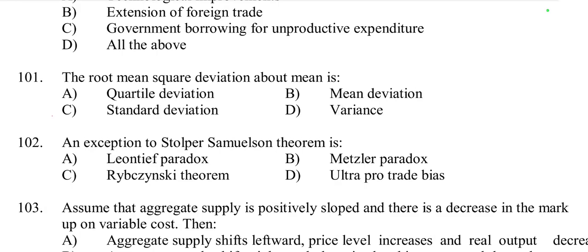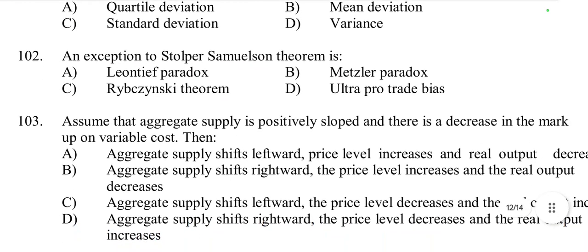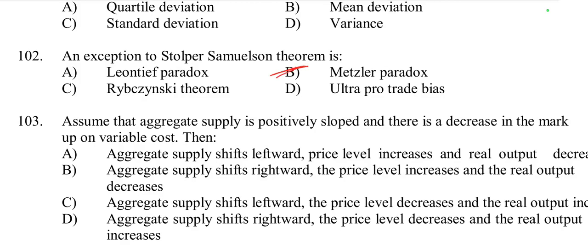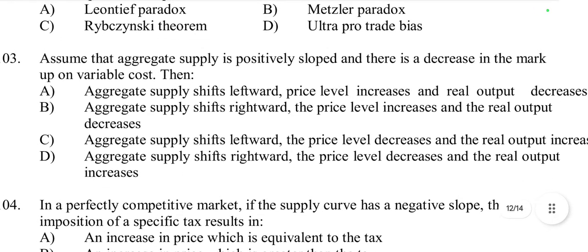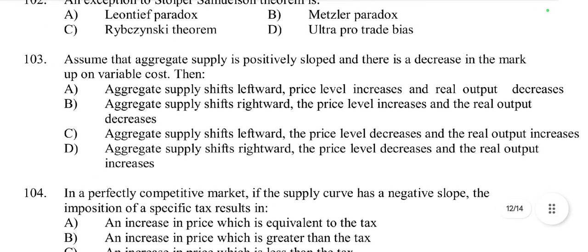Question number 101: Root mean square deviation about the mean is called standard deviation. Question number 102: An exception of the Stolper-Samuelson theorem is the Metzler paradox — this is a repeated question.